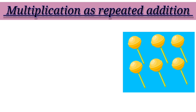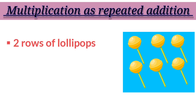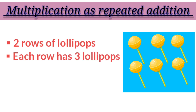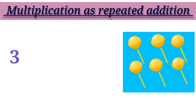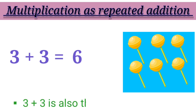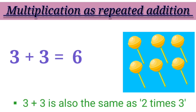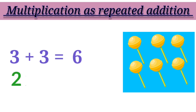Look at this example. Here we have two rows of lollipops. Each row has three lollipops. On the first row we have one, two, three — three lollipops. And on the second row we have another three lollipops. So all together we have three plus three equals to six. Three plus three is also the same as two times three. Hence, three plus three equals to six, or two multiplied by three equals to six.